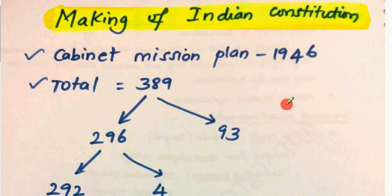In this Cabinet Mission, there are 389 members. These 389 members are from British India.